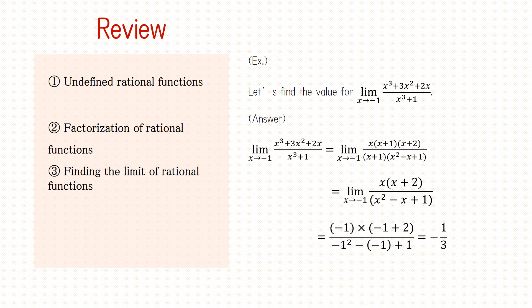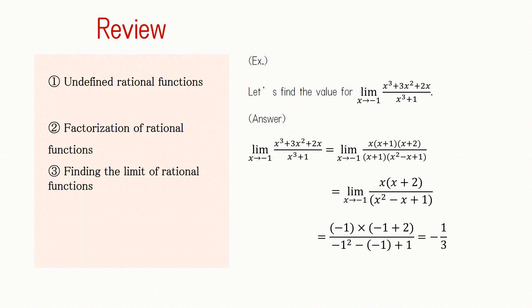Factoring (x³ + 3x² + 2x) / (x³ + 1) gives us x(x + 1)(x + 2) over (x + 1)(x² − x + 1). After eliminating (x + 1) from both numerator and denominator, we get x(x + 2) / (x² − x + 1). Substituting negative 1 for x, the limit as x approaches negative 1 equals negative 1 over 3.